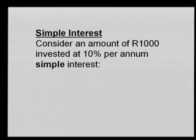Let's look at simple interest. Consider an amount of one thousand invested at 10% per annum — simple interest. When we talk of simple interest per annum, the amount is fixed. The interest is fixed, even if it's for five years. Year one, year two, year three, year four, year five — you're getting the same amount.